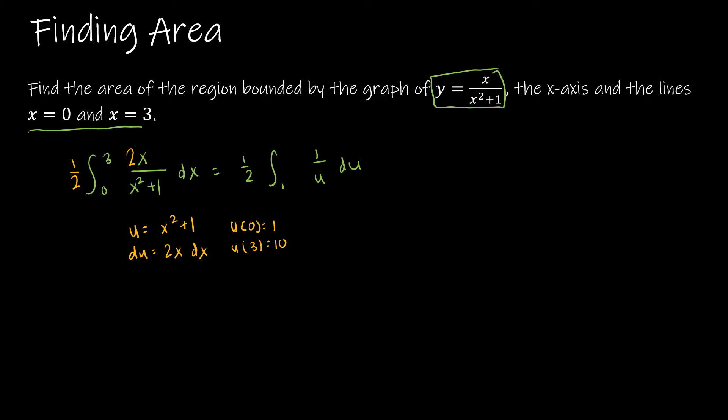So now I'm going to integrate from 1 to 10, and now by doing that step, remember, that means I don't need to replace the u back into the function. So my final integral before I use the fundamental theorem of calculus is 1 half times the natural log of the absolute value of u, and I don't need a plus c, because now I'm going to integrate from 1 to 10.